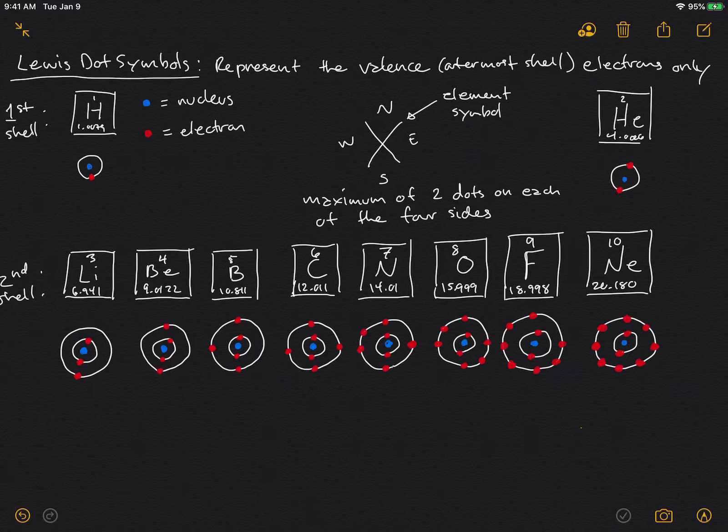Lewis dot symbols are a nice way to count electrons in atoms and eventually we'll study molecules. Lewis dot symbols of atoms represent only the valence electrons, only the outermost electrons, so you don't count electrons in shells that are full, the inner shells, or sometimes they're called the core shells.